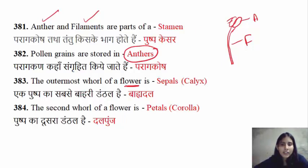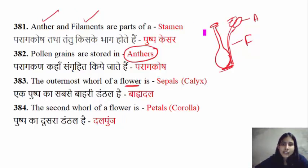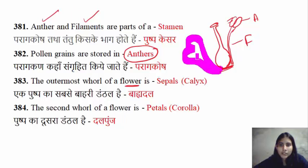The outermost part of the flower — from outside to inside — has petals on the outside, then the sepals (the green leaf-like structures on the outside).